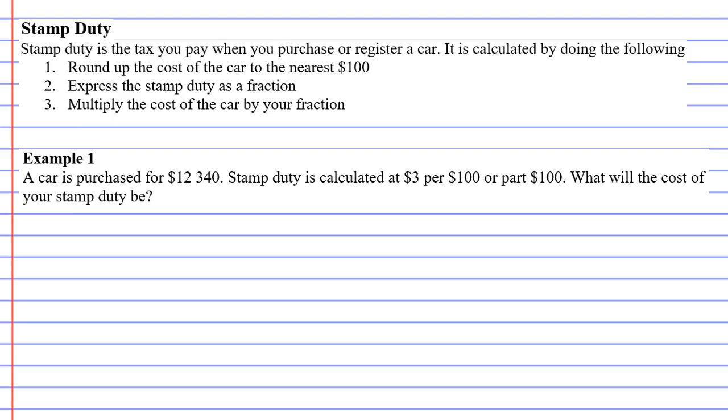A car is purchased for $12,340 and stamp duty is calculated at $3 per $100 or part $100. What will the cost of your stamp duty be?